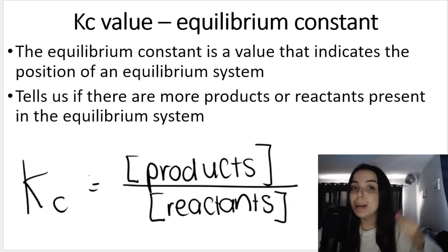The Kc value or equilibrium constant tells me the position of an equilibrium system. What this means is when a certain system has reached dynamic chemical equilibrium, remember that means when the rate of the forward reaction is equal to the rate of the reverse reaction.